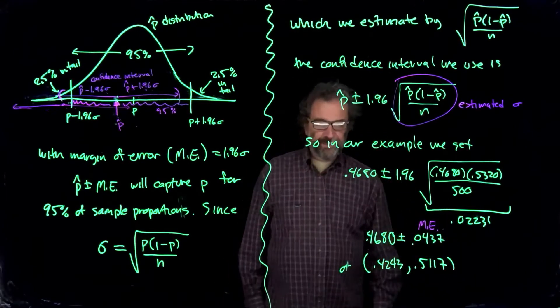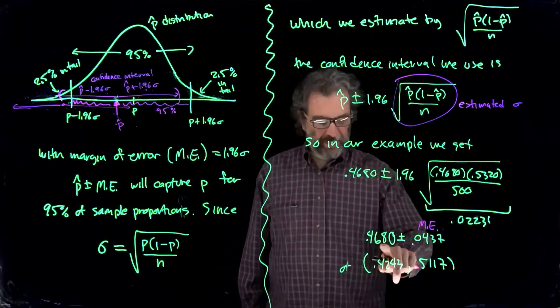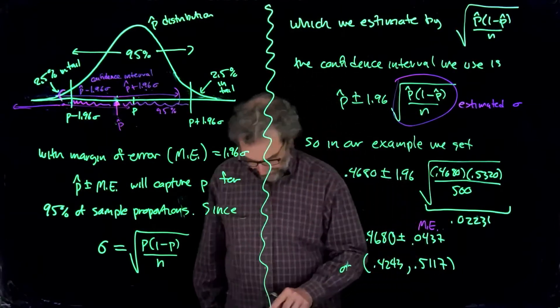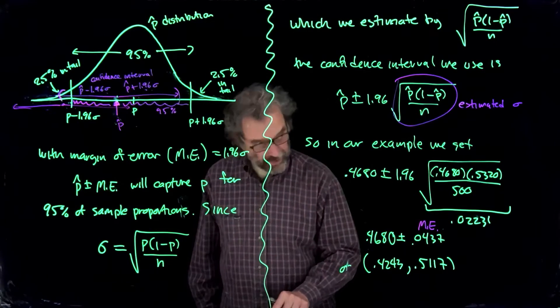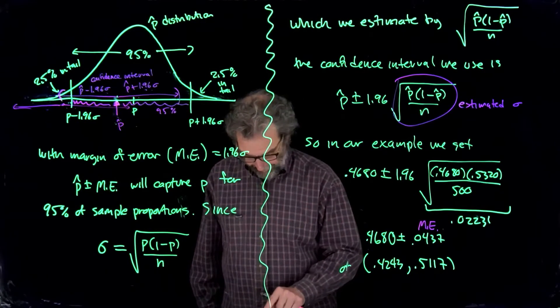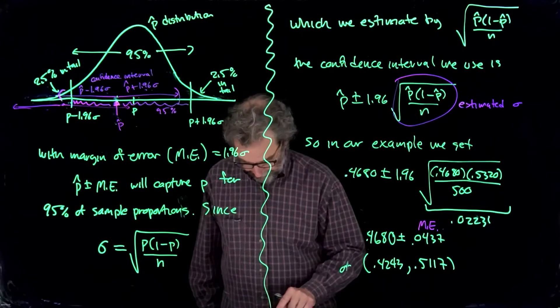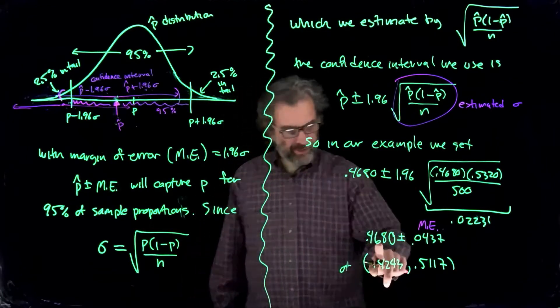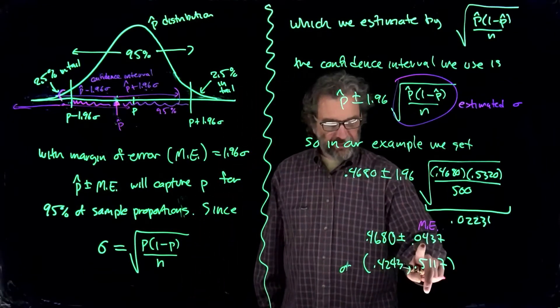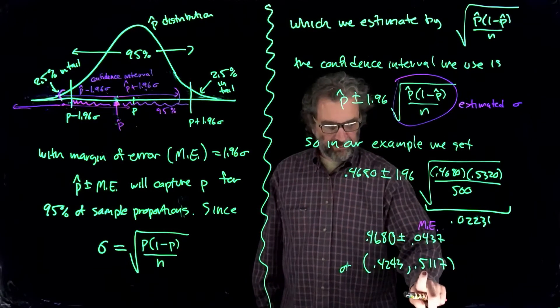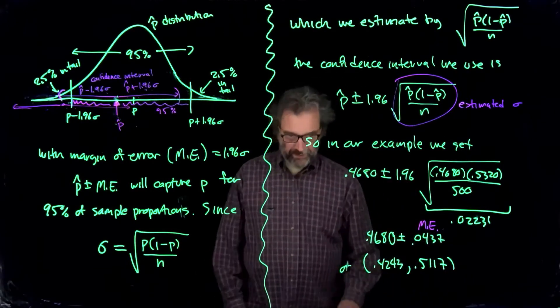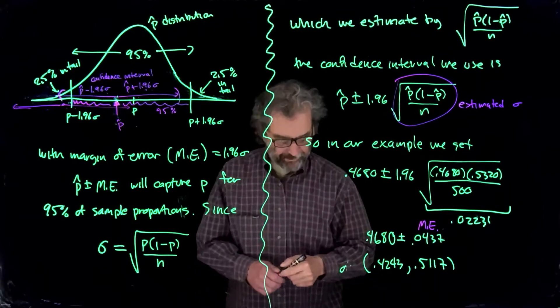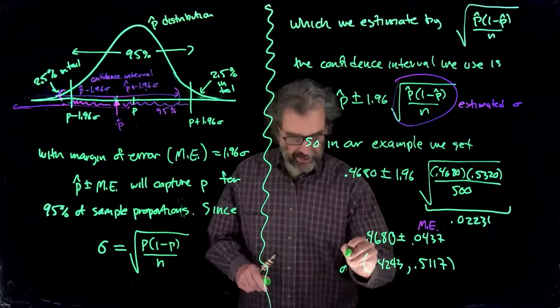And ordinarily what we'll do then is we'll just convert that into an actual interval. We'll take 0.4680, we'll subtract that off. So 0.4680 minus 0.0437 gives me 0.4243. I take 0.4680 and add 0.0437, I get 0.5117. So we expect the true population proportion to fall in that range.